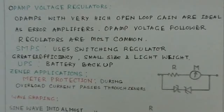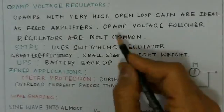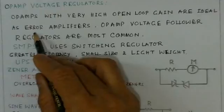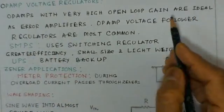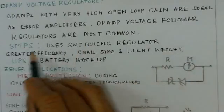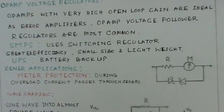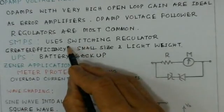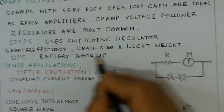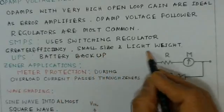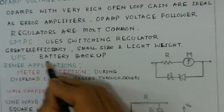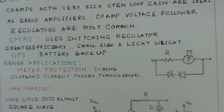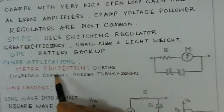Op-amp voltage regulators are also very common. Op-amps provide very high open-loop gain, making them useful as error amplifiers, and op-amp voltage followers are commonly used for this purpose. Switch Mode Power Supplies (SMPS) are very commonly used today, using switching regulators with advantages of greater efficiency, small size, and light weight. Another type is the Uninterruptible Power Supply (UPS), which provides battery backup and comes in online or offline types.